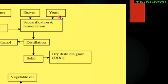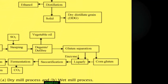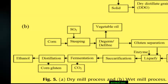In simultaneous saccharification and fermentation, enzyme and yeast are both added together. Dextrin is obtained after hydrolysis of starch, and the yeast's preferred substrates are glucose, fructose, or sucrose. The resulting ethanol undergoes distillation, and the solid residue — dried distillers grains — is separated as a nutritious animal feed. In wet milling, chemical treatment with dilute H2SO4 or SO2 gas is used.